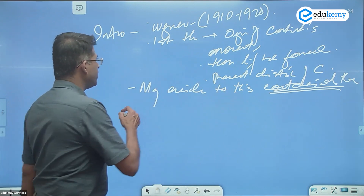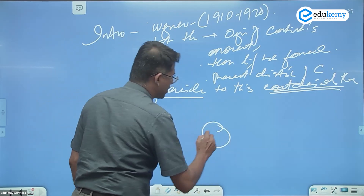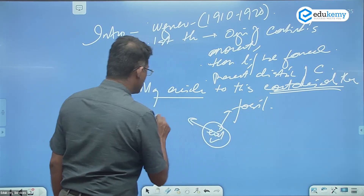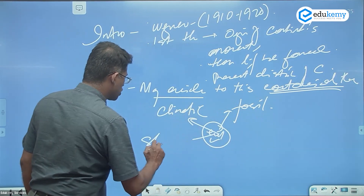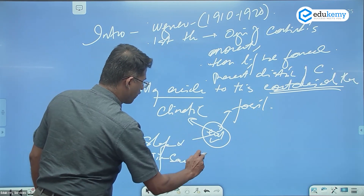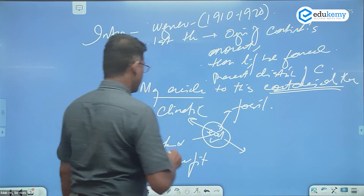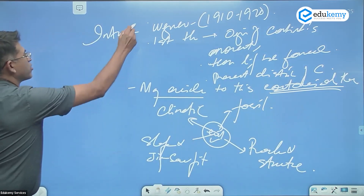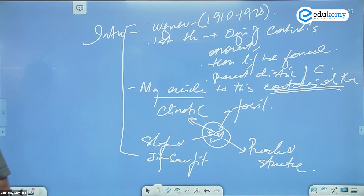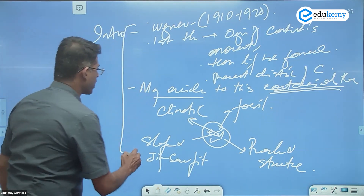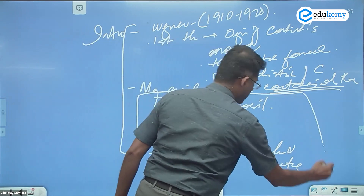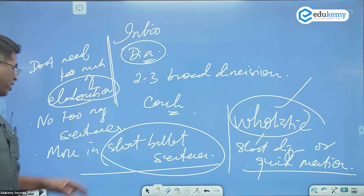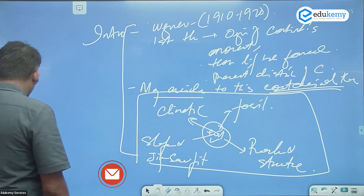So draw a schematic box listing the evidences of the drift theory — fossil evidence, climatic evidence, shape and jigsaw-fit evidence, and rock structure evidence. Keep the introduction within half a page with two or three lines and one diagram. Schematics and pictorial tools are also considered diagrams. Then give a heading for each category.